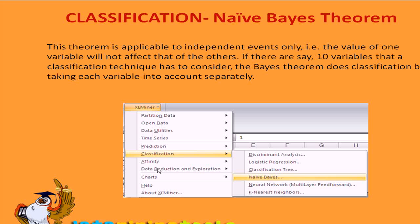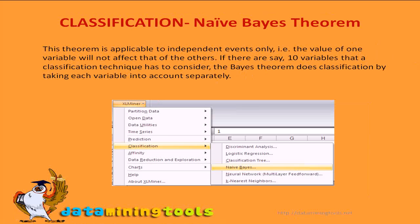Let us now look at creating the classification model using the Naive Bayes theorem. A difficulty arises when you have more than a few variables and classes, and you would require numerous observations to estimate these probabilities. Naive Bayes classification gets around this problem by not requiring lots of observations for each possible combination. Rather, the variables are assumed to be independent of one another, therefore the probability that a variable is dependent on any other value is eliminated. Naive Bayes classifiers assume that the effect of a variable value on a given class is independent of the value of other variables — this assumption is called class conditional independence.